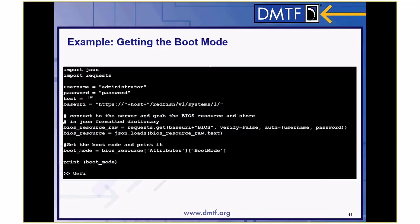Here we have a Python script to get the value of boot mode. Python has libraries that handle JSON data and do HTTP requests. First, we initialize variables such as username, password, the host IP address, and the system URI. We do an HTTP GET request with the URI of our BIOS resource and the authentication. Once we get the raw data, we load it into a dictionary, then index the dictionary with 'attributes' and 'boot mode', since all BIOS settings reside in the attributes object. We index the setting we want and print it — in this case, the value is UEFI.